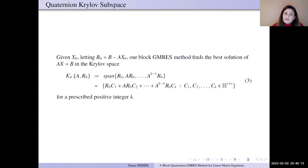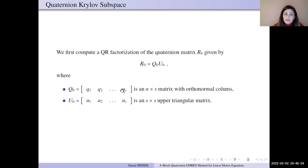Now, we will start Krylov space, quaternion Krylov space. Given x0 and letting r0 be b minus Ax0, we want to find the solution in this Krylov space. So, first of all, we compute QR factorization of the quaternion matrix r0, given by r0 equals Q0 times U0, where Q0 has orthonormal columns and U0 is triangular matrices.